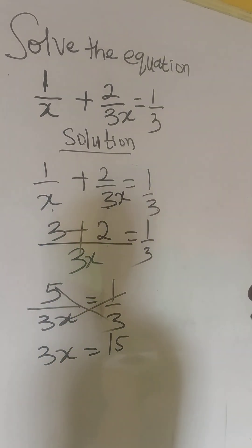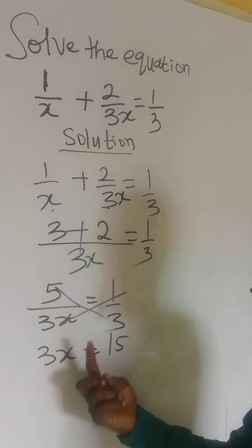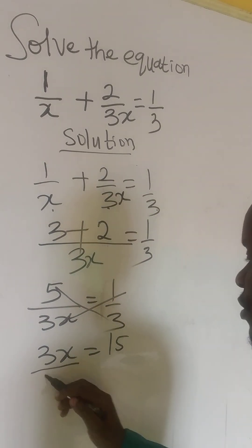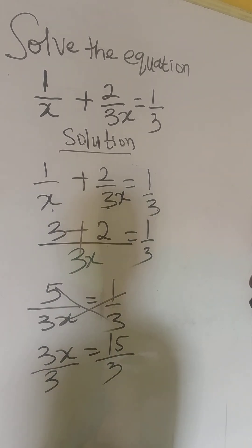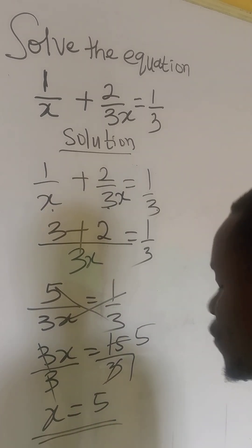And from here, to get our x, what we do is to divide both sides by the coefficient of x, which is 3. 3 divided by 3, 3 here is 1, 15 divided by 3 here is 5. Therefore, our x equals to 5.